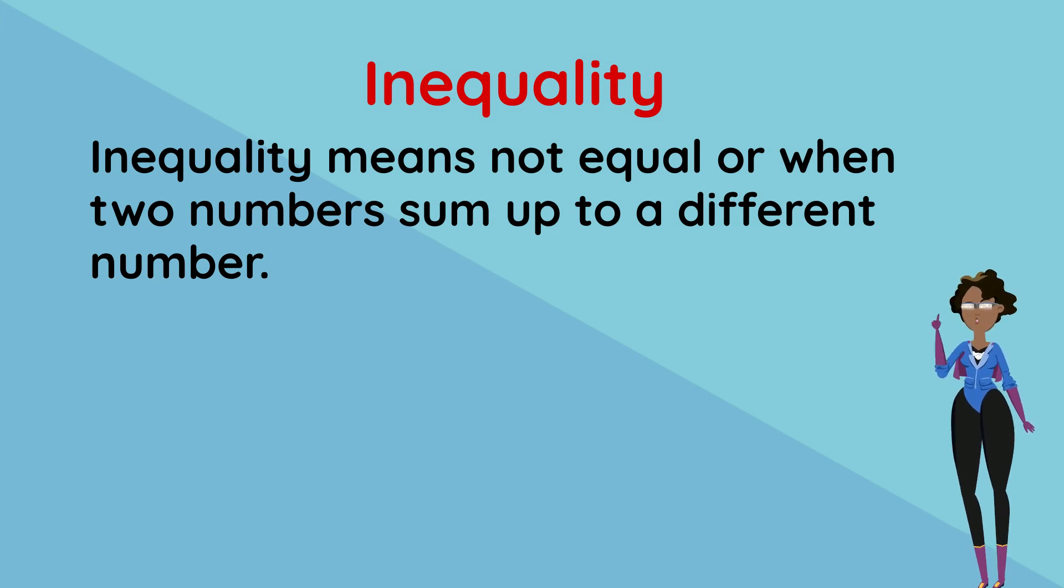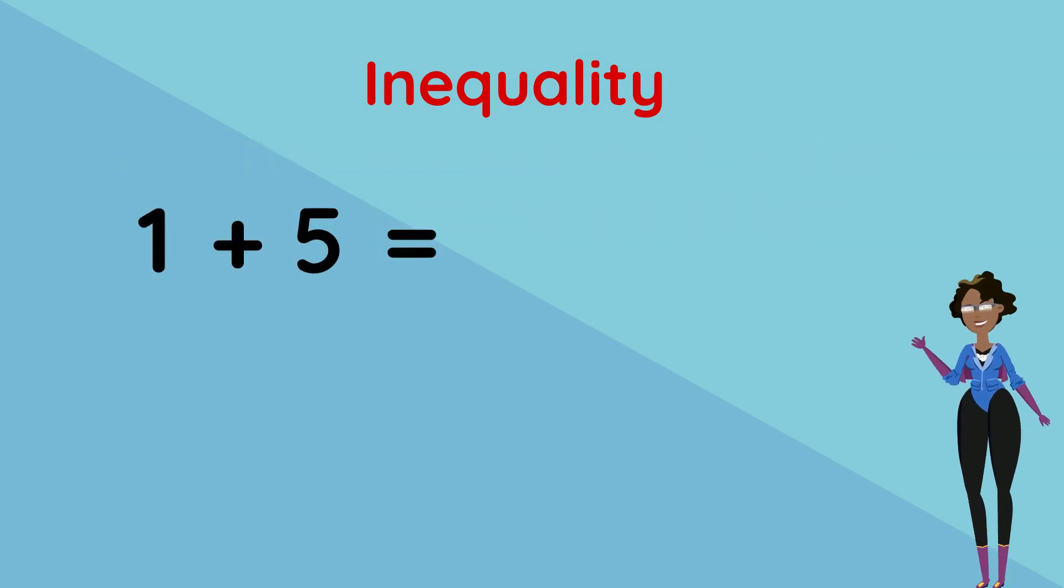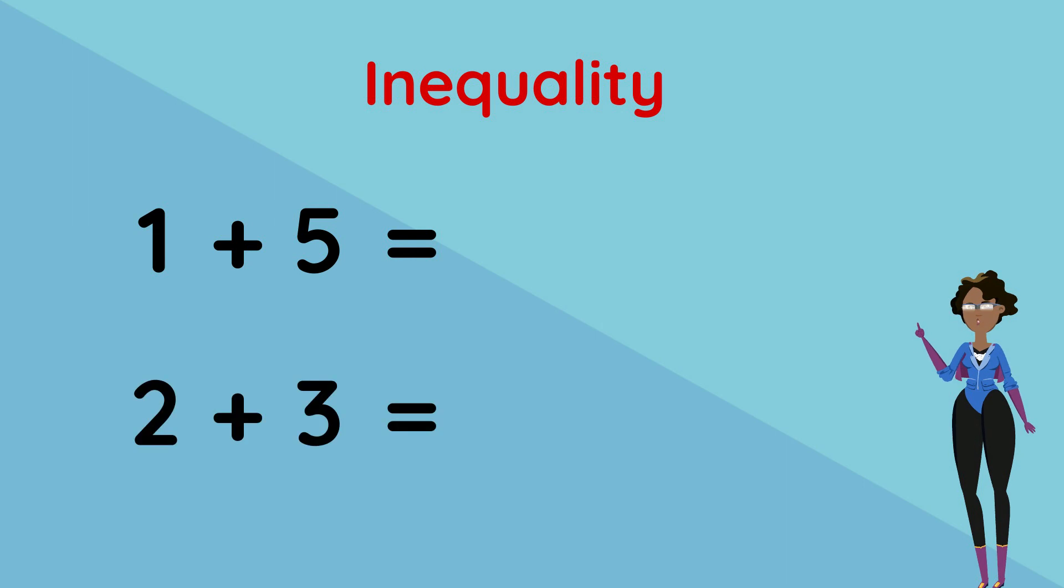Let's look at a quick example. The first equation is one plus five and the second is two plus three. Are these equations equal or unequal? Well, one plus five is equal to six and two plus three is equal to five. So they are unequal.